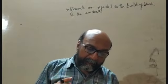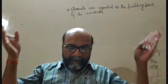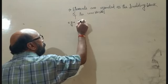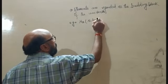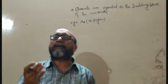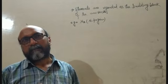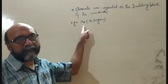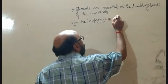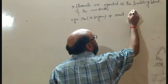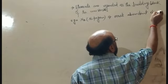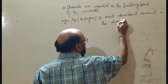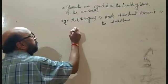Nitrogen is the most abundant element in the atmosphere. In the atmosphere, nitrogen, oxygen, carbon dioxide, water vapour, and some inert gases are present, but out of all these, nitrogen is the most abundant element in the atmosphere.